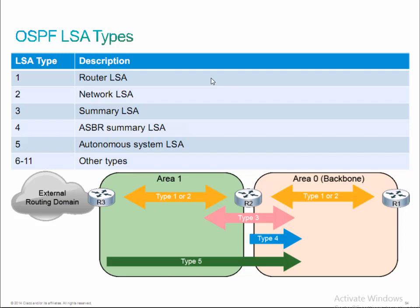Let's start with the type 1 LSA. I'm going to describe these LSAs based on a couple of concepts. Number one, what is the scope — does it get flooded through the entire autonomous system or does it stay within the area? We'll call that either intra-area or inter-area. Intra-area means it stays within the area itself; inter-area means it moves from one area to the next.